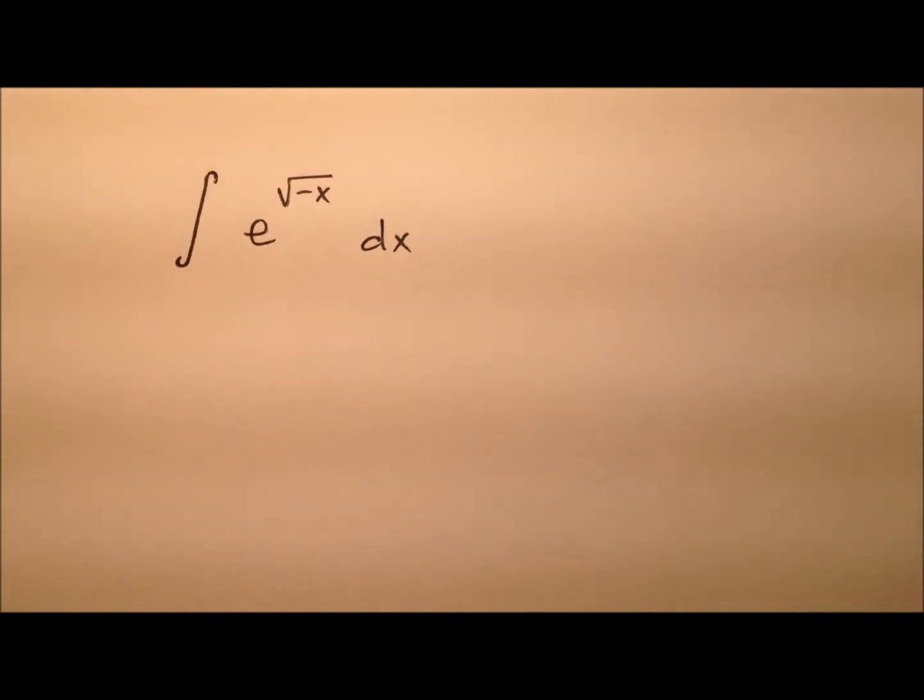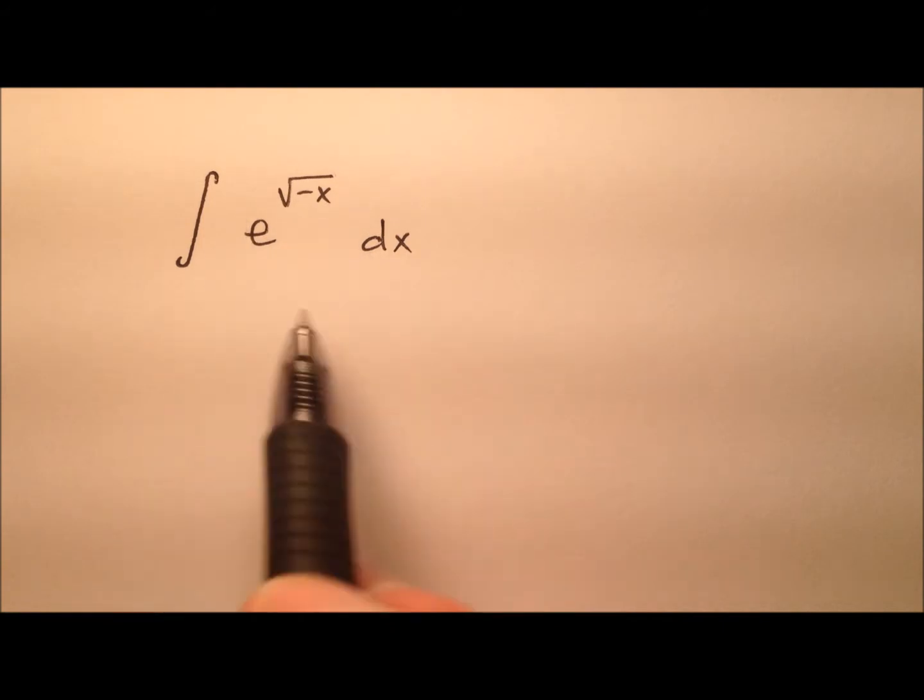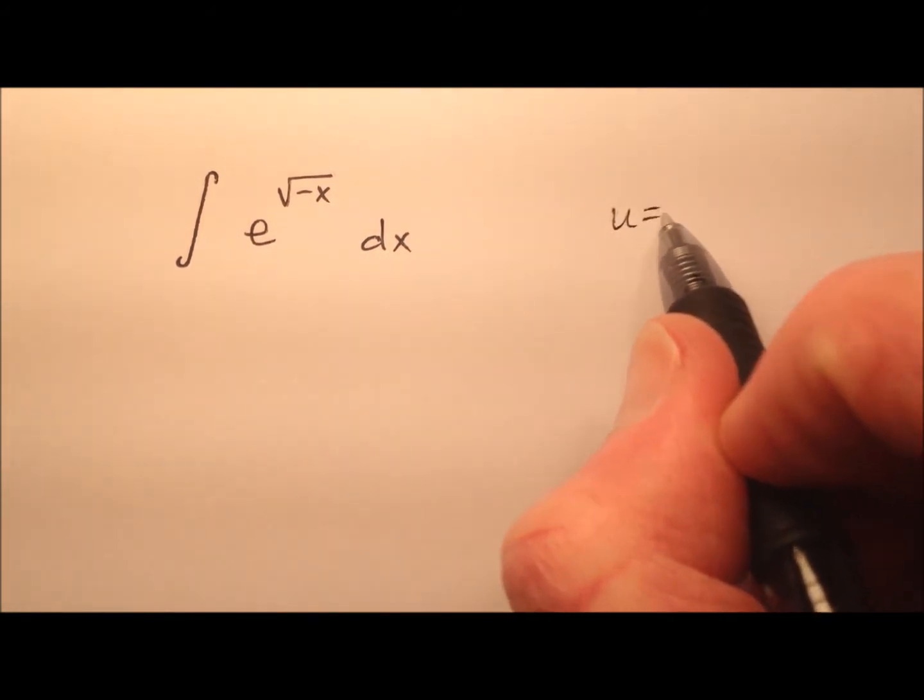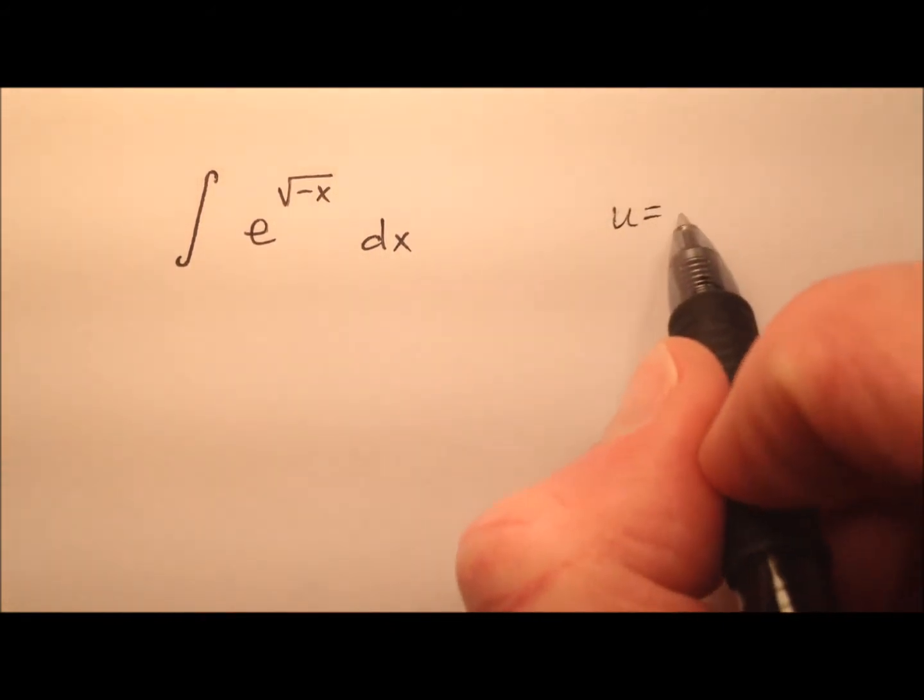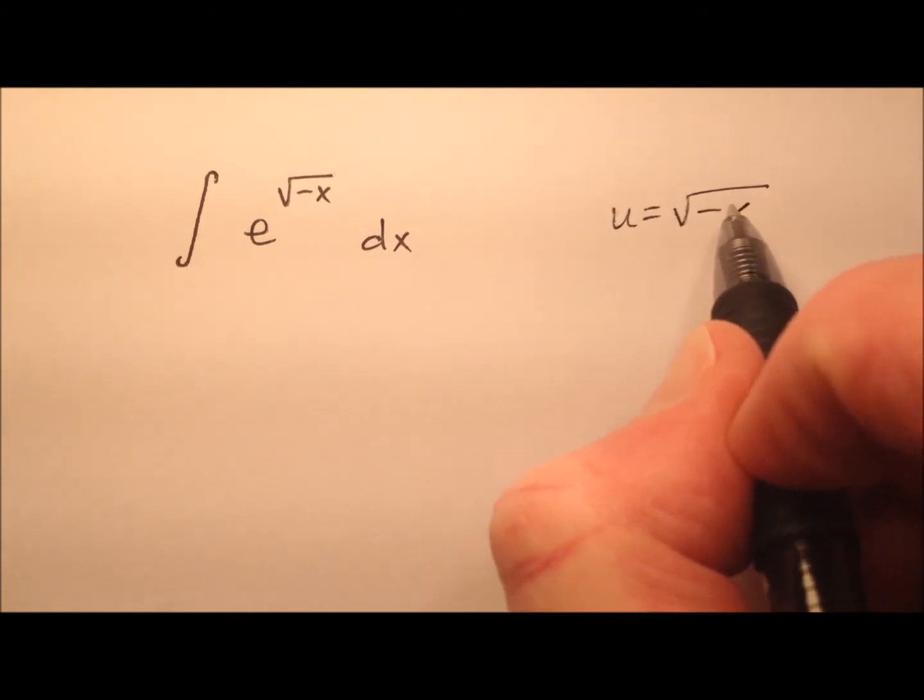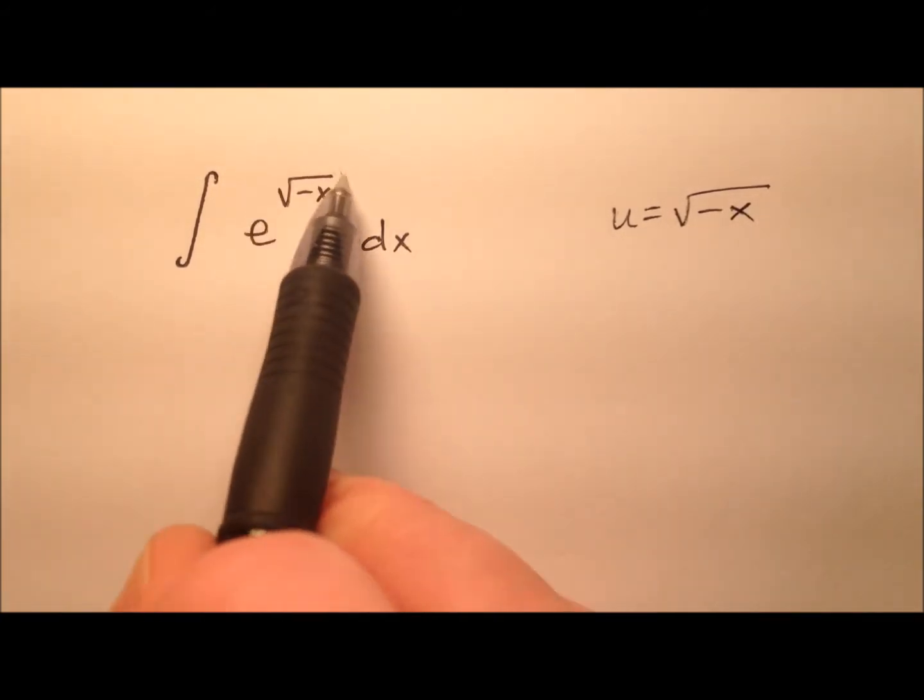Alright, so looking at this, it seems like this is going to be a good candidate for a u substitution, and let's go ahead and make u that square root of negative x. It's that whole exponent up there.